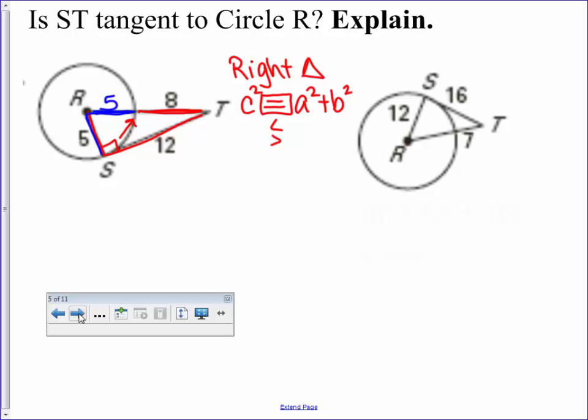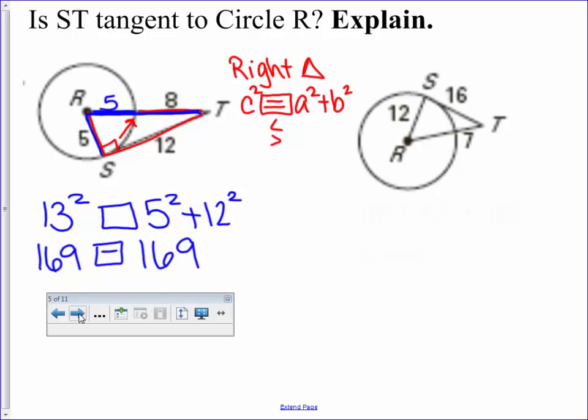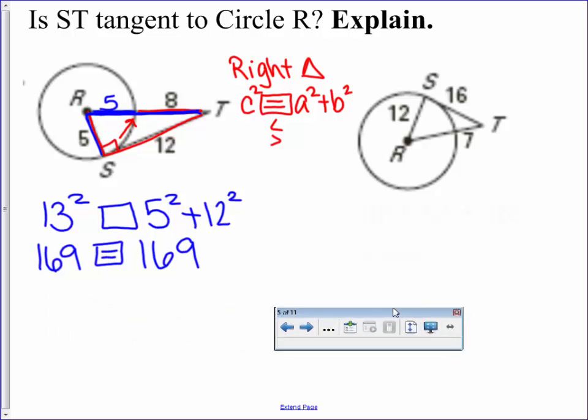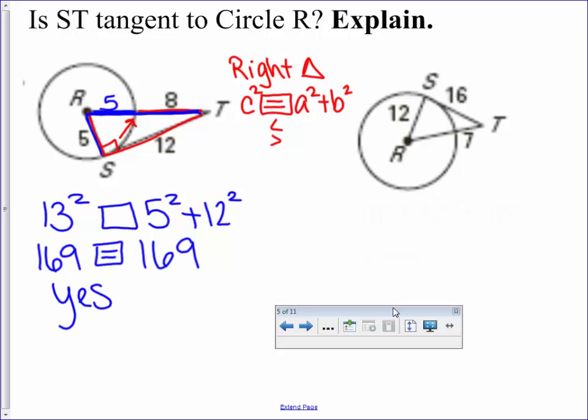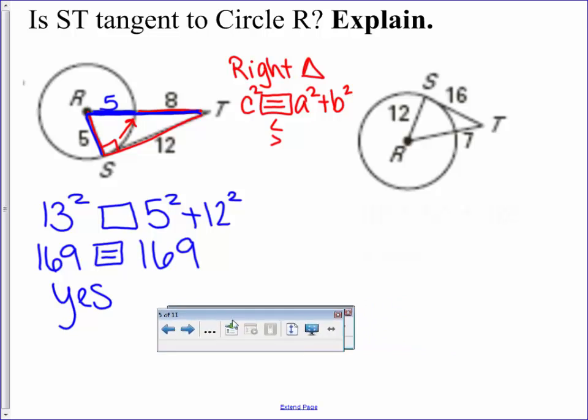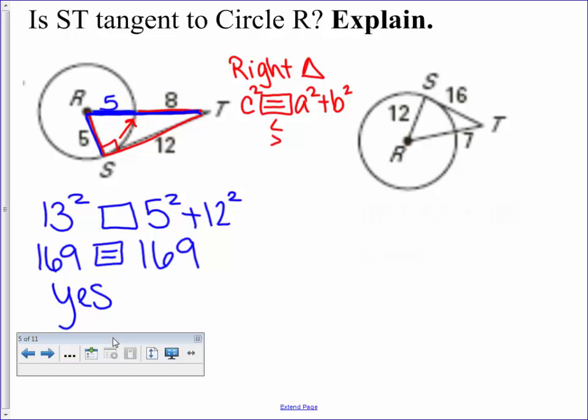So remember, we can also label that five. So our C from R to T is 5 plus 8, or 13 squared. 5 squared plus 12 squared. So when you square this, you should get 169 to 169. So we can put an equal sign inside the box and say, Yes, this is tangent because it equals out. So go ahead and see if you can solve for the second one. And answer the question, is ST tangent to circle R? So let's see if you got what we got. Well, first off, we have to add 12 there. So that's where we got the 19. Well, when you plug in your numbers, 19 squared does not equal 12 squared plus 16 squared. So this line is actually not a tangent line.